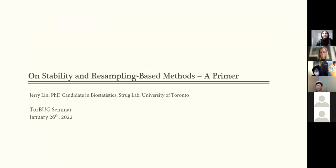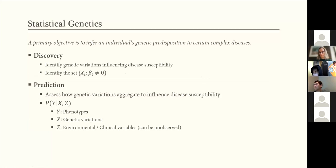Thanks for having me here, and today we'll just quickly talk about the stability of variable selection methods. So when we discuss statistical genetics, I think one of the main objectives is to really understand the genetic predisposition to certain diseases for an individual.